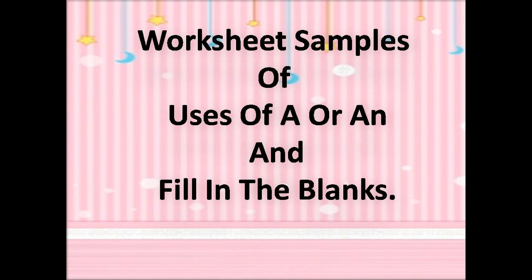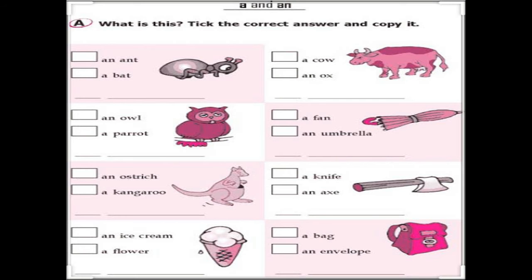Now I have a worksheet sample for you — uses of A or AN and fill in the blanks of my apple. Yahaan aapke saamne bahut si pictures hain aur unke aage options diye gaye hain. You will tick the correct answer. For example, the first picture is aunt — options are an aunt or a bat, so here we will tick an aunt. Our next picture is ox — options are a cow or an ox — you will tick an ox. Our third picture is owl — options are an owl or a parrot — you will tick an owl. Baaki jo pictures hain unke bhi correct option par tick karna hai.